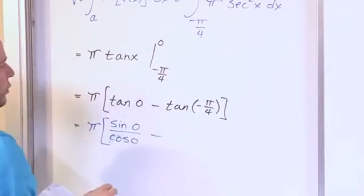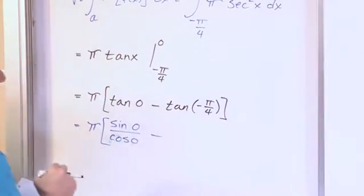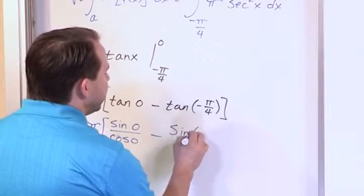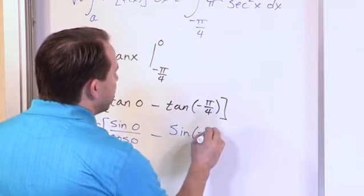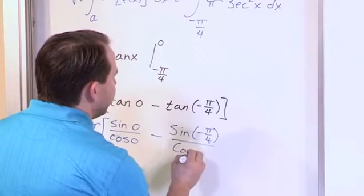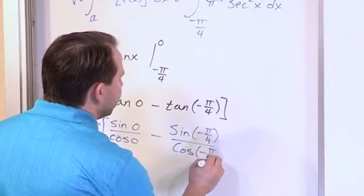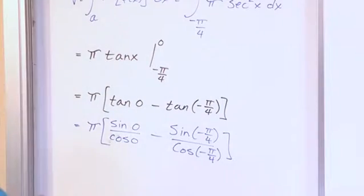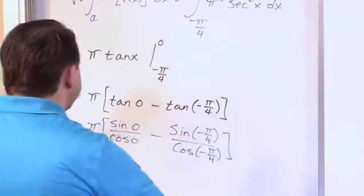Right, now who remembers what the tangent of negative pi over 4 is? You're probably going to make a mistake if you try to do this in your head. So I write it as the sine of negative pi over 4 over cosine of negative pi over 4. And that way I know that I don't have any mistakes. I know everything's written down, and I just evaluate each line separately.